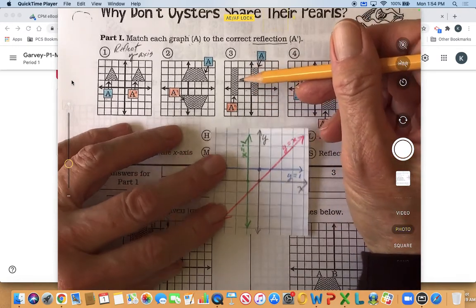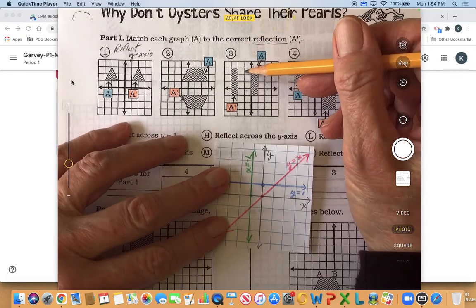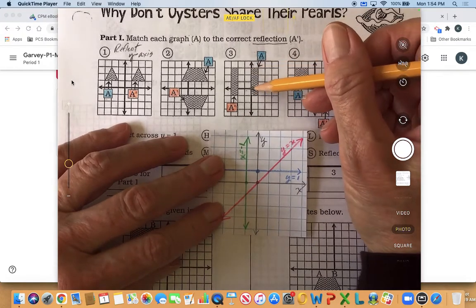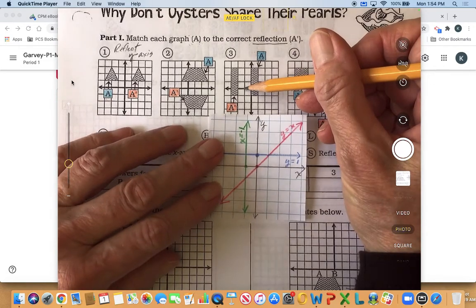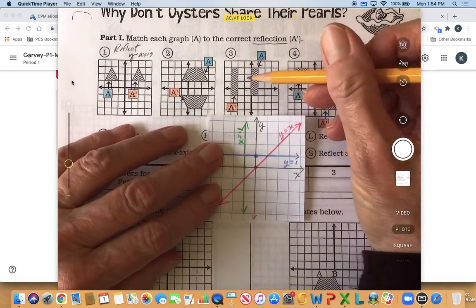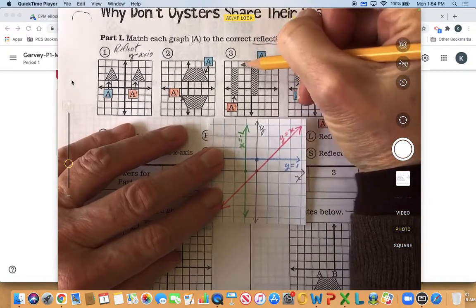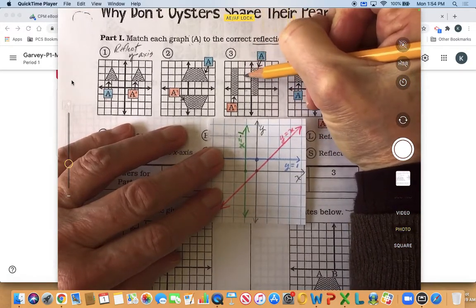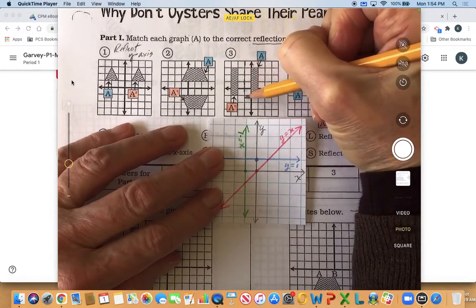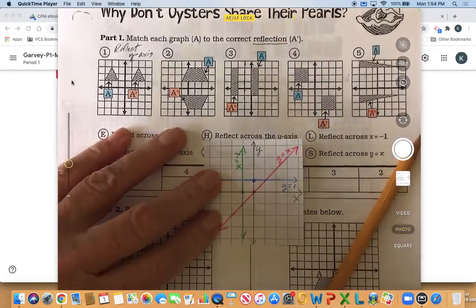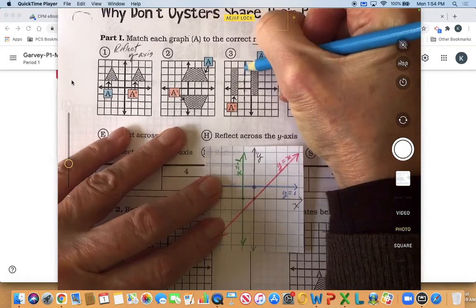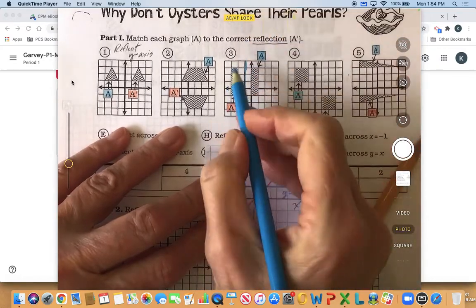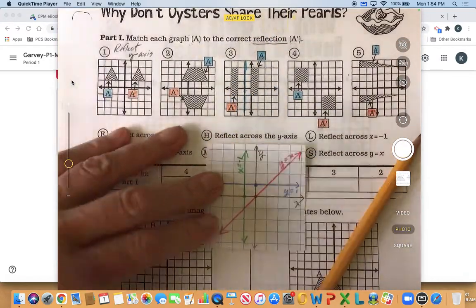So it looks like it might be reflecting over this line which is right between these two and this line is negative one or x is negative one. And so it looks like it's flipping over this line right here, or I can actually draw it, like color it in a little so you can see. Yeah it pretty much looks like those are reflecting over that.